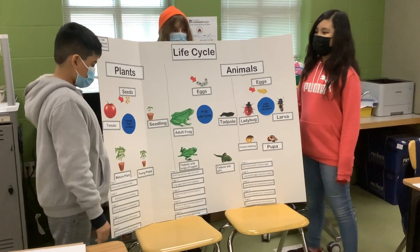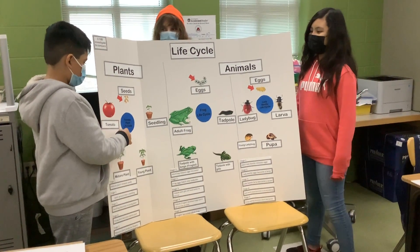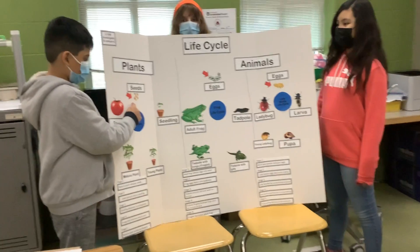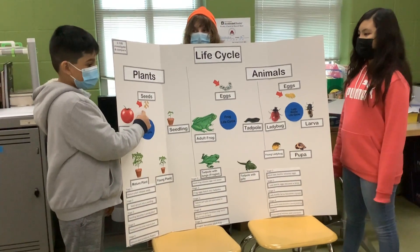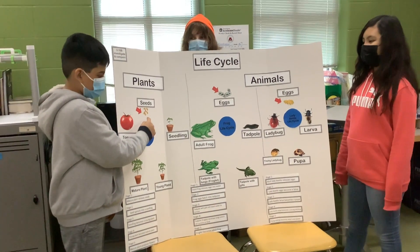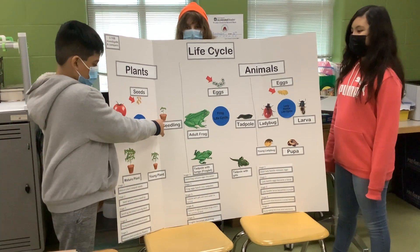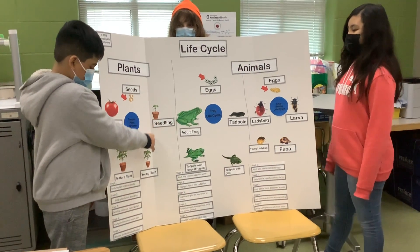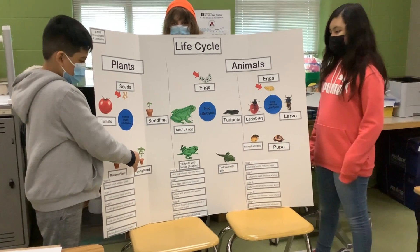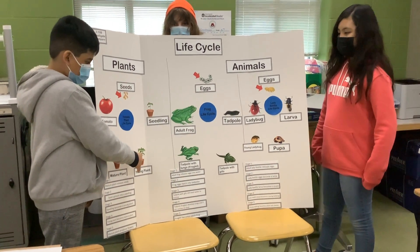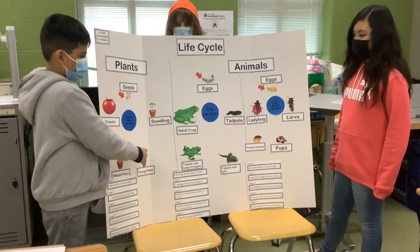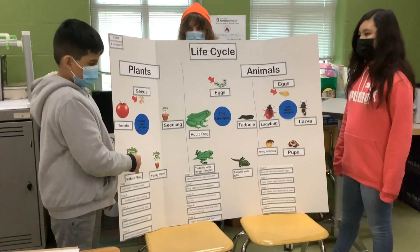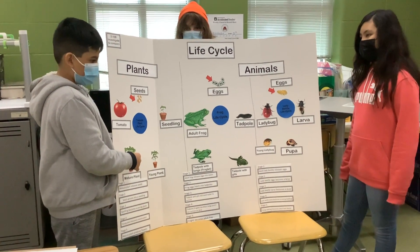The cycle of a tomato plant starts off from the seed, and the seeds grow into a seed leaf. Once the seedling keeps on growing, it will turn into a young plant, and the young plant will grow into a mature plant.